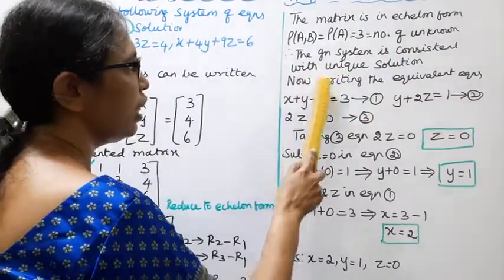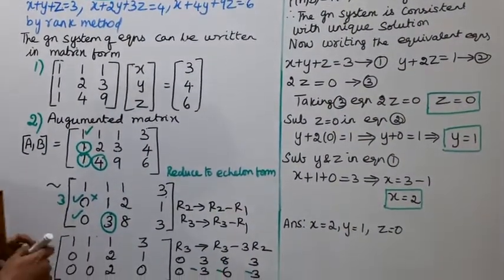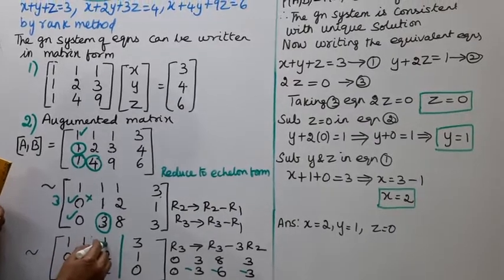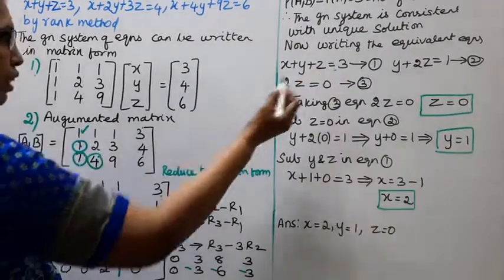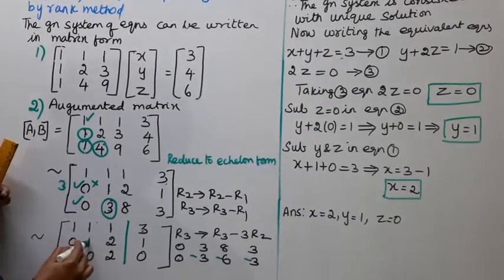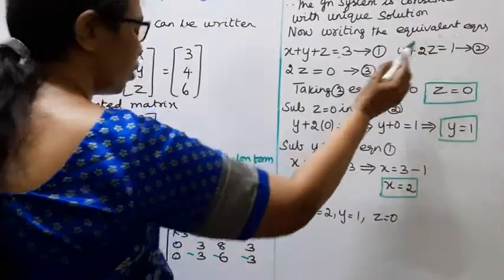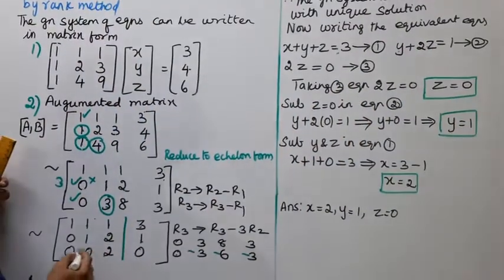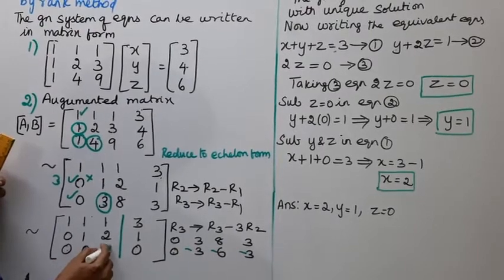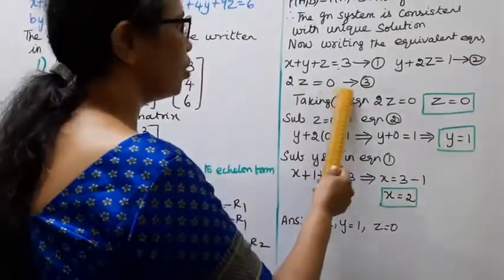Now writing the equivalent equations. x plus y plus z equal to 3, first equation. Second, 0x, that is y plus 2z equal to 1. y plus 2z equal to 1. Third, 0x, 0y, that is 2z. 2z equal to 0. 2z equal to 0, third equation.